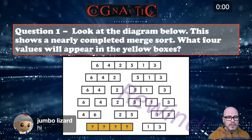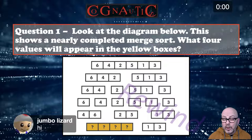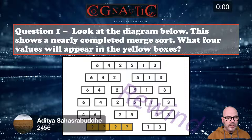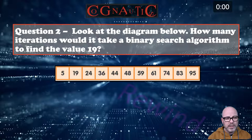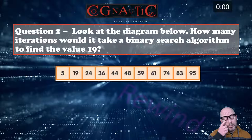What four values will appear in the yellow boxes below? We've got nine viewers so far — well done for coming to number 20! The answer was two, four, five, six — actually two, four, five, sixty-four, five, six. Outstanding. Next question: look at the diagram below — how many iterations would it take a binary search algorithm to find 19?